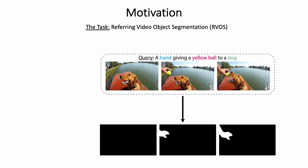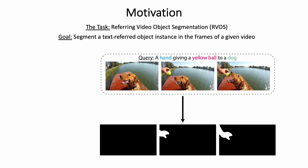We are interested in solving the Referring Video Object Segmentation task, or RVOS. The goal of the task is to segment a text-referred object instance in the frames of a given video. To illustrate, in the following example, the query reads 'a hand giving a yellow ball to a dog,' and the expected output is a set of per-frame segmentation maps for the hand. In RVOS, the text query may describe the object of interest either by its appearance or by the action it is involved with.